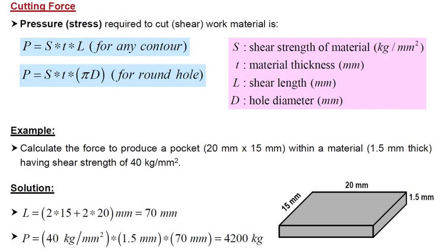Cutting force required is the pressure or stress required to cut or shear the work material. It can be calculated with shear strength of the material S multiplied by thickness of the material t multiplied by length of the cutting edge L. It could be a contour or perimeter of a circle in case of cutting a circular blank.